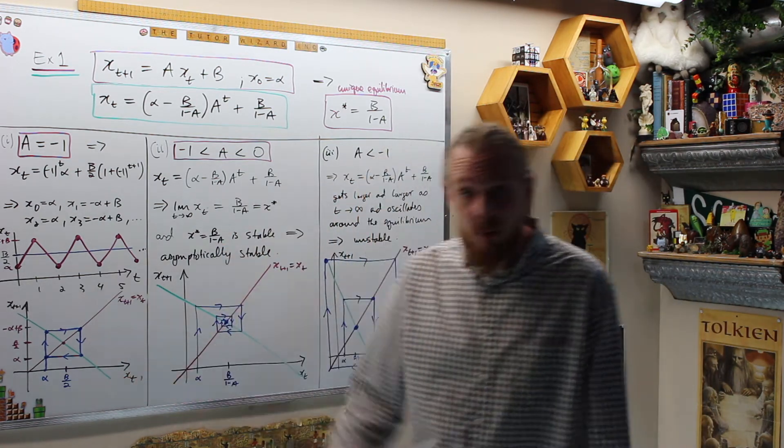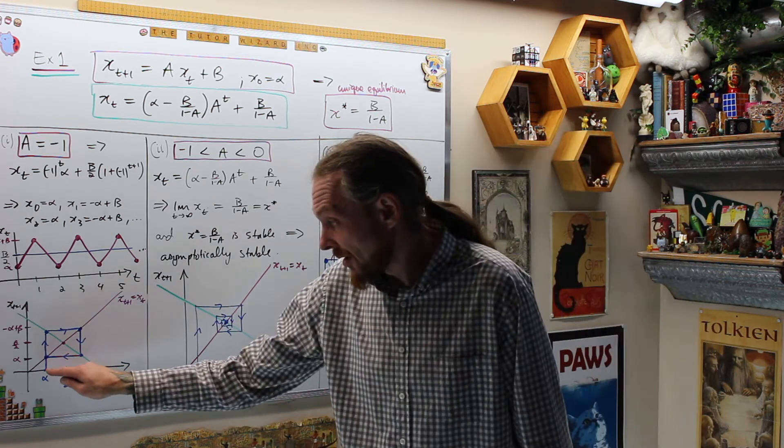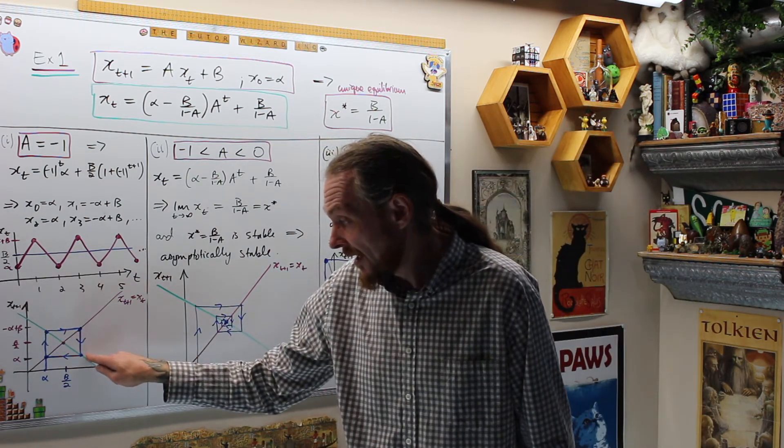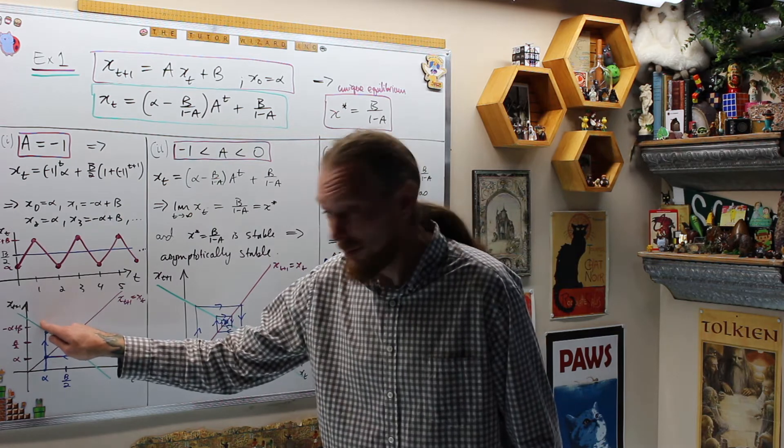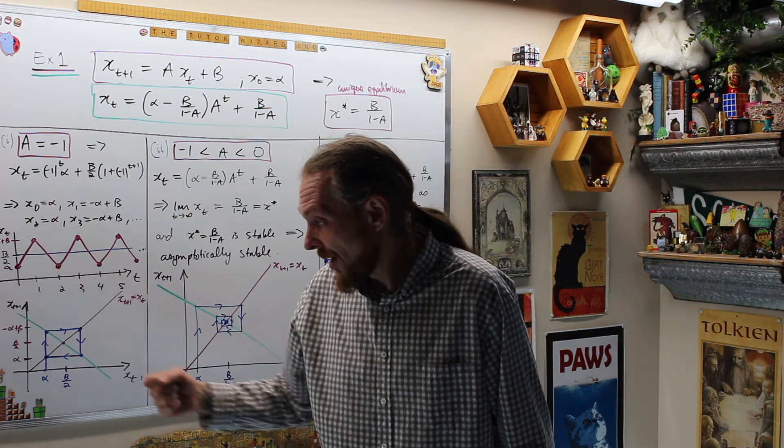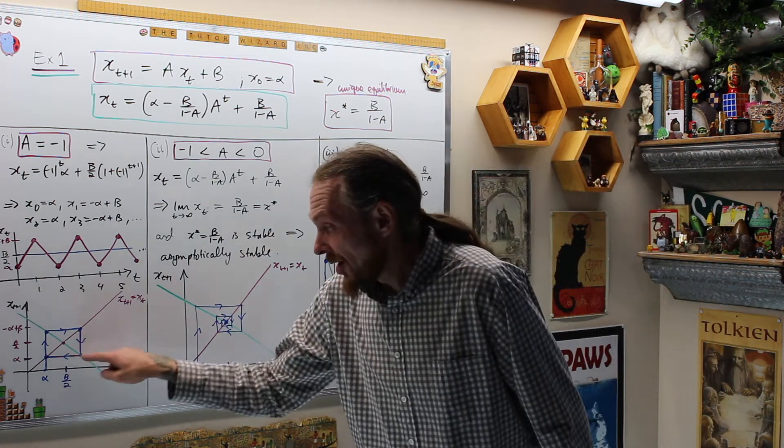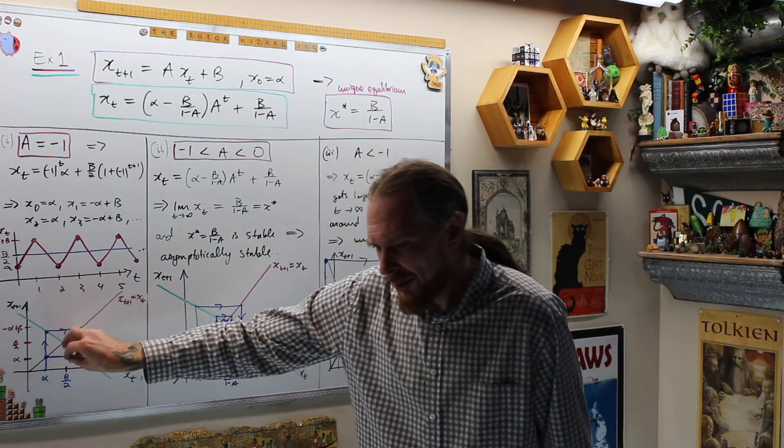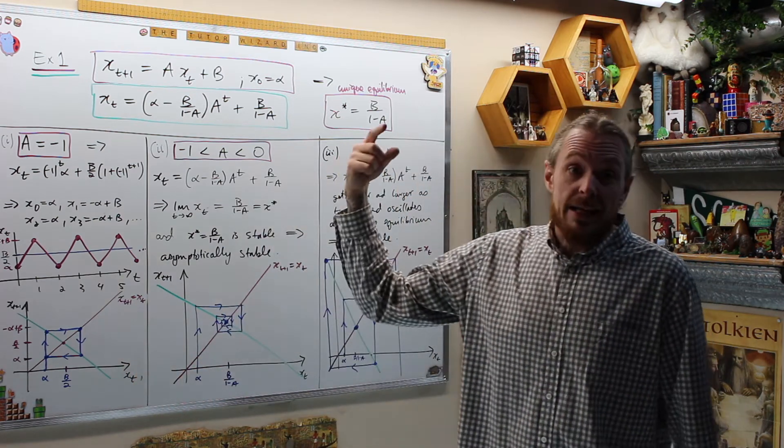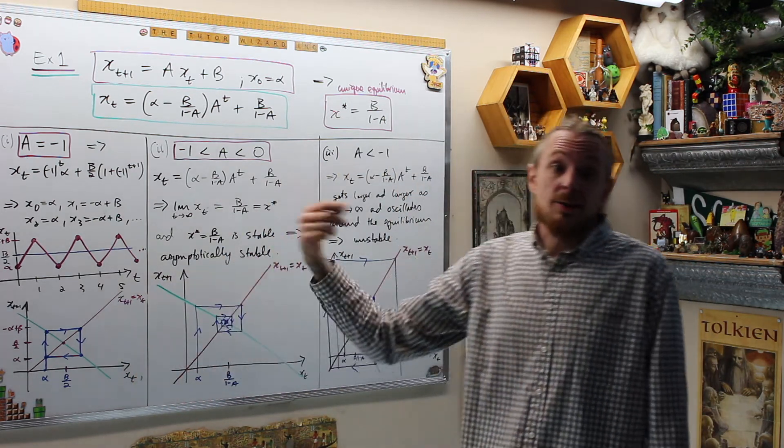So even pictorially from the definition, or using this epsilon definition, we have that this is a stable equilibrium. And from the cobweb diagram, we also see that it's just going to oscillate. These are the two values that's allowed to obtain, alpha and negative alpha plus b. But basically, it's just oscillating around there, but it's not getting closer and closer and closer. It's not converging towards there, so it's an equilibrium which is stable, but it's not attracting.